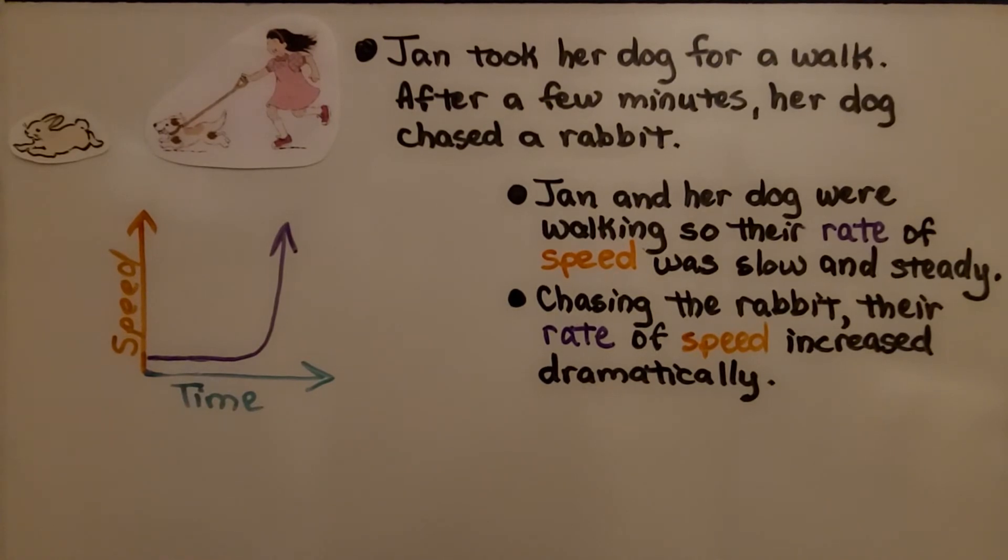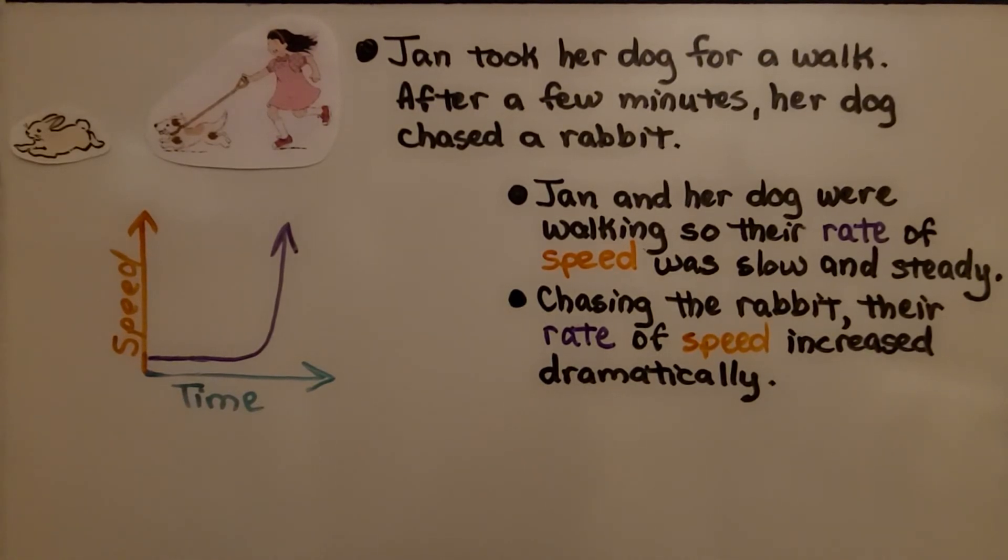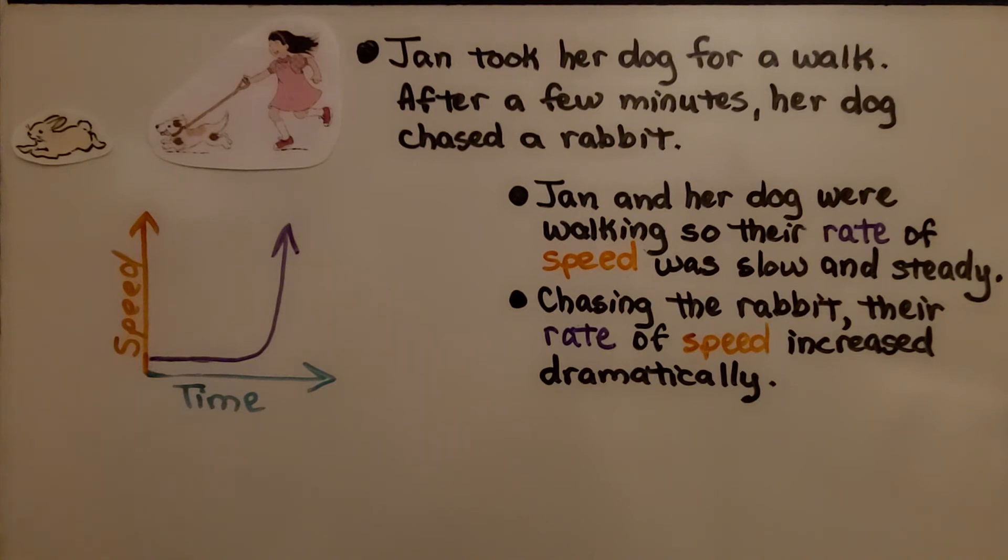Jan took her dog for a walk. After a few minutes, her dog chased a rabbit. Jan and her dog were walking, so their rate of speed was slow and steady—it was constant. Then the dog saw the rabbit, started chasing it, and the rate of speed increased dramatically because it started running.